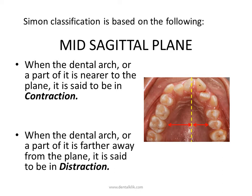The Mid Sagittal Plane is determined by points approximately 1.5 cm apart on the mid-palatal raphe. The raphe, or median plane, passes through these two points at right angles to the Frankfort Horizontal Plane. This plane is used to determine deviations in the general form and width of the dental arches and the axial inclination of teeth in relation to the midline of the palate and the head.